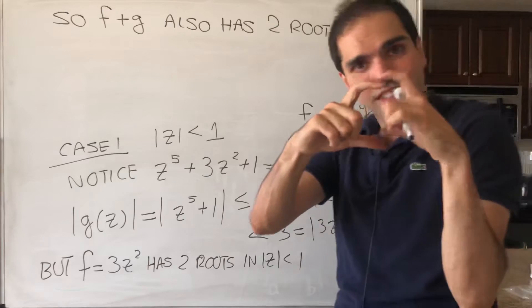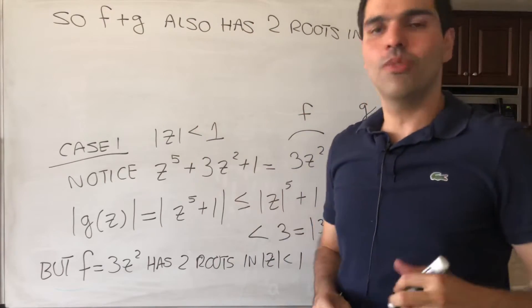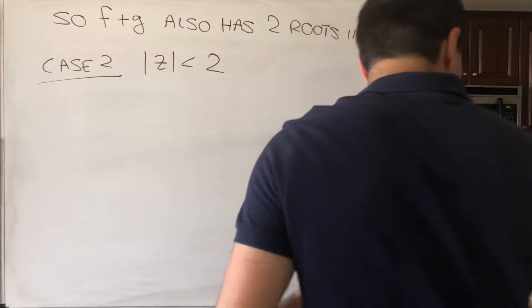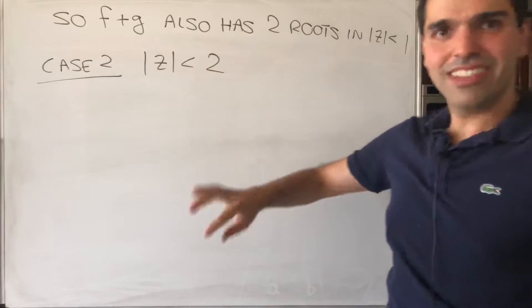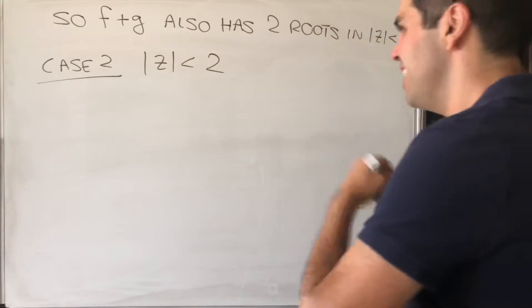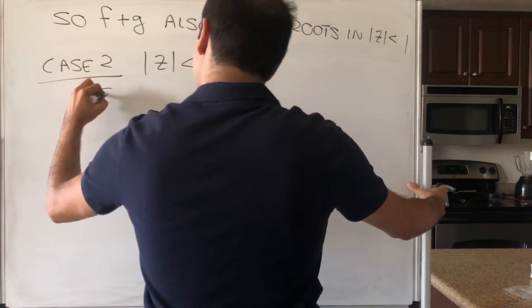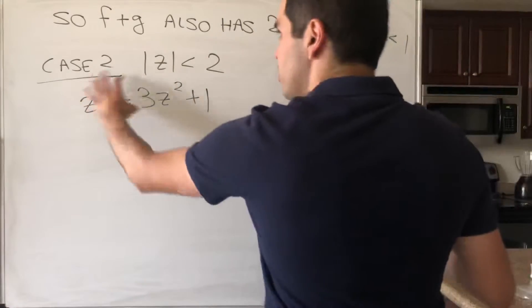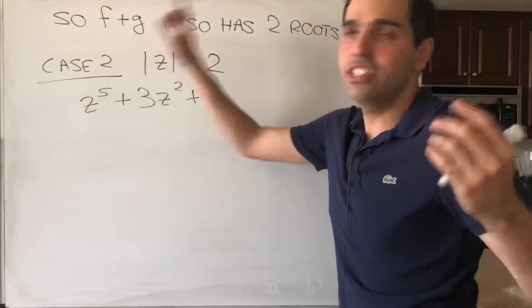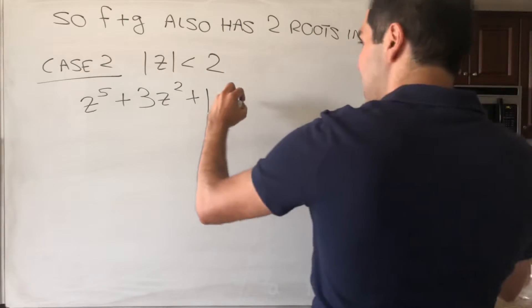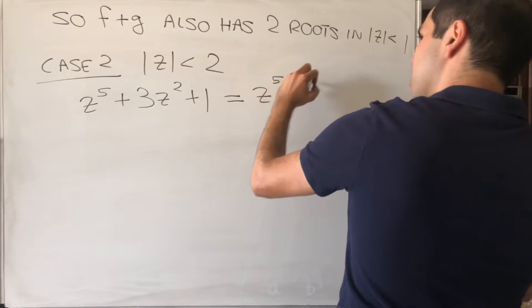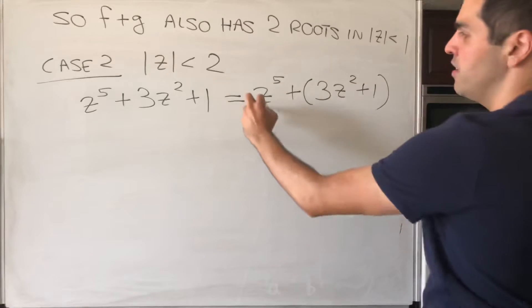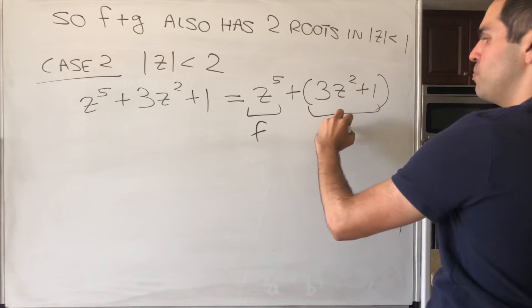So we already figured out what happens in the smaller disk, and now we just need to figure out what happens in the larger disk. So |z| < 2. And what's interesting here is this kind of switch of roles, because let's take again our polynomial z^5 + 3z^2 + 1. Well, in this case, z^5 has a big power, so it turns out this will dominate this in this case. So this actually becomes z^5 + 3z^2 + 1.